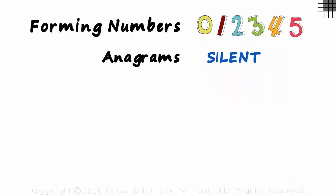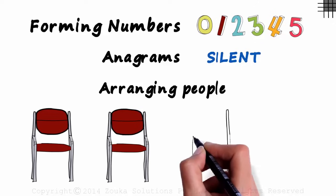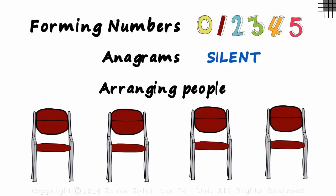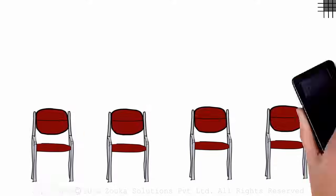Another category of problems would be that of arranging people. We could be asked the number of ways in which we can seat people on four chairs, or maybe arrange them around a circular table. So in this session and the next few, we will be looking at the first category: arranging digits to form numbers.